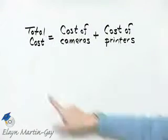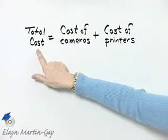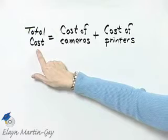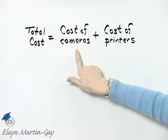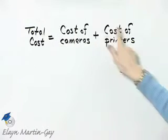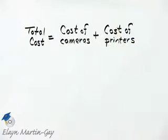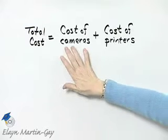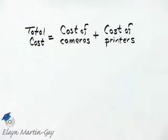The total cost of these items will be the cost of the cameras plus the cost of the printers. So first, let's calculate the cost of the cameras.